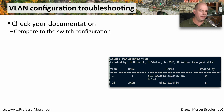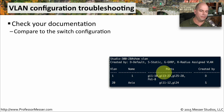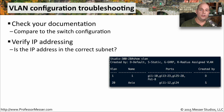This is the VLAN configuration for a very simple switch in my lab. I have VLAN 1 and VLAN 20 on the switch. You can see all of the different gigabit ethernet ports configured for VLAN 1, and the small number of interfaces configured for VLAN 20. You can then check what interface on the switch you're plugged into, what VLAN has been assigned to that interface, and compare it to the IP address you were originally given. Ideally, that VLAN and that IP address should both be referring to the same network. If they're not, you have a VLAN misconfiguration.